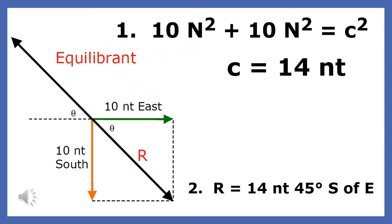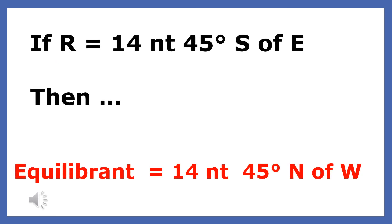Since these forces are separated by an angle of 90 degrees, we can use the Pythagorean theorem to find the resultant. Before we draw our resultant, we use two dotted lines to convert our vector drawing into a parallelogram. We create our equilibrium by putting one half of our ruler on the resultant and drawing an arrow in the opposite direction with the same magnitude. If the resultant is 14 newtons 45 degrees south of east, then the equilibrium is 14 newtons 45 degrees north of east — equal in magnitude, opposite in direction.